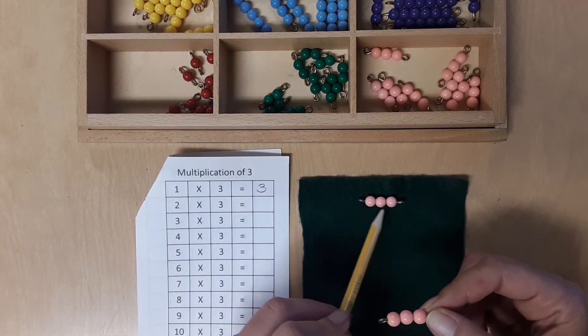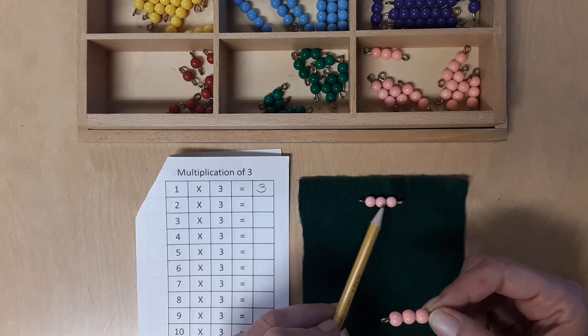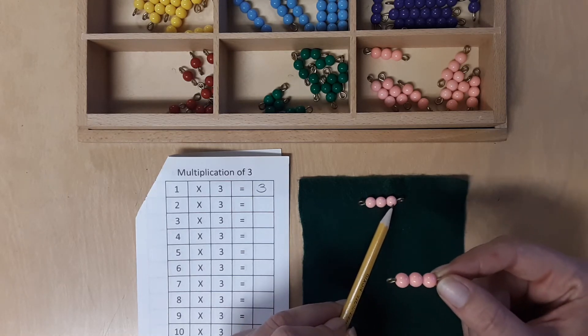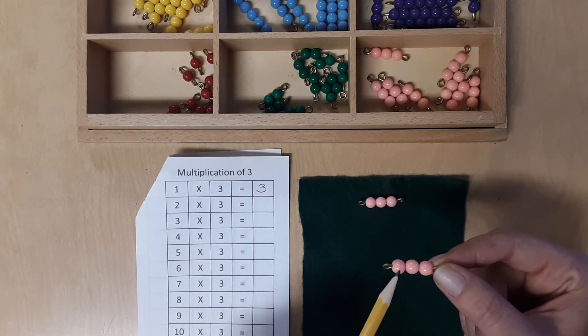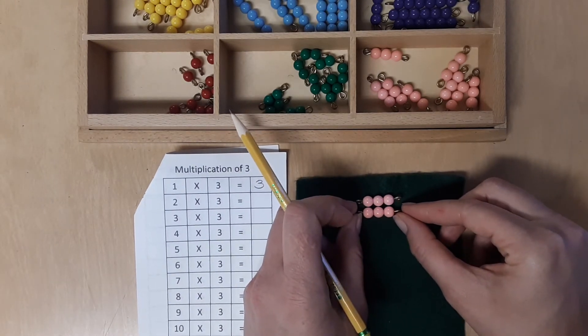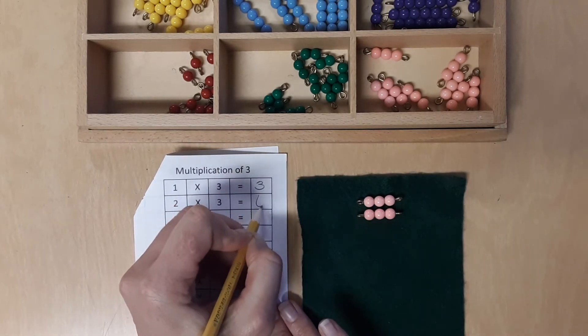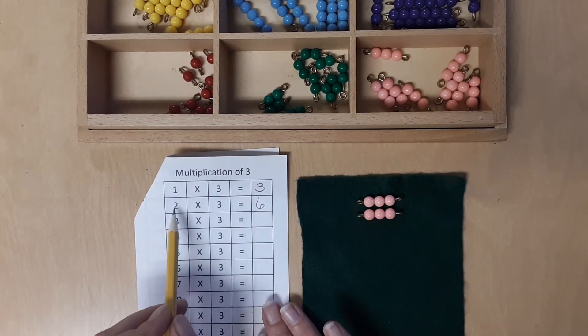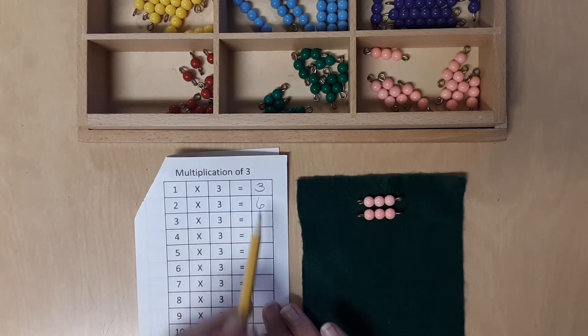We know that one of them is 3. 1, 2, 3. So we can count on from 3. 4, 5, 6. 2 times 3 equals 6.